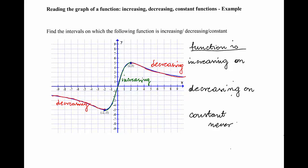Let's start with the increasing part. The function is increasing starting from the point (-2, -5) up to the point (2, 5). Through that interval, the values of x change from -2 to 2, and therefore we can say that the function is increasing on the interval from -2 to 2.